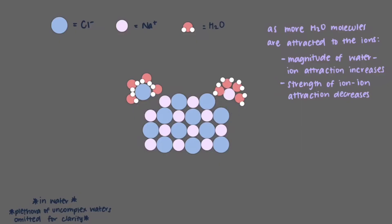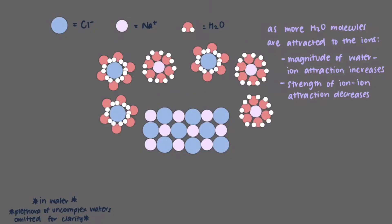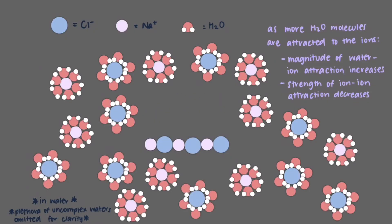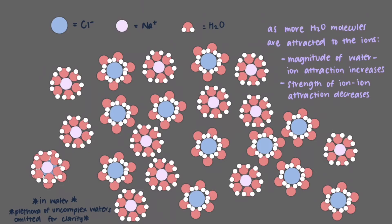Therefore, the ions are pulled away from each other and as they are, water continues to be attracted to them until the ions are completely surrounded by water molecules. Eventually, each ion that made up the solid ionic compound will be surrounded by water molecules and they will be evenly distributed in solution. This is true for any ionic compound that dissolves in water.